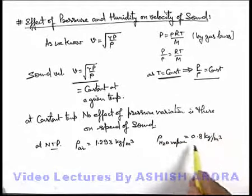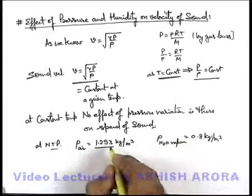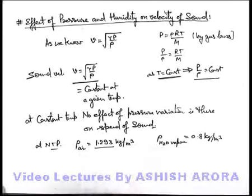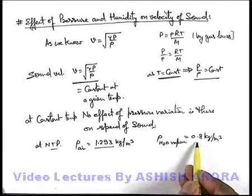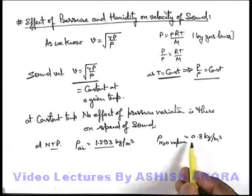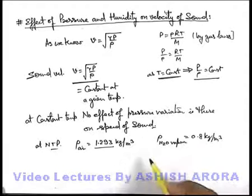That means water vapor is less dense compared to air. That's why clouds float over the air, because water vapor density is less. So if we calculate the sound speed in moist air...